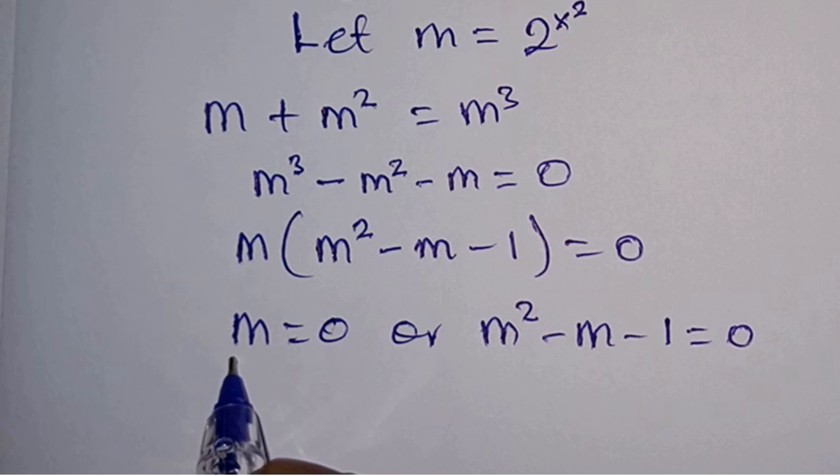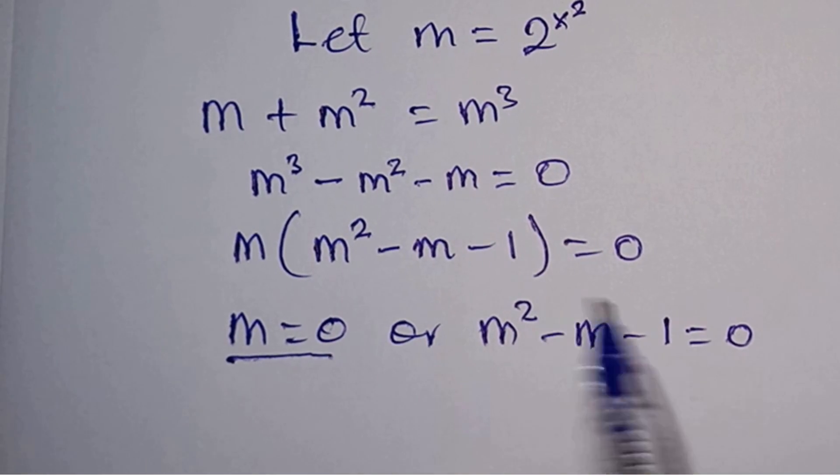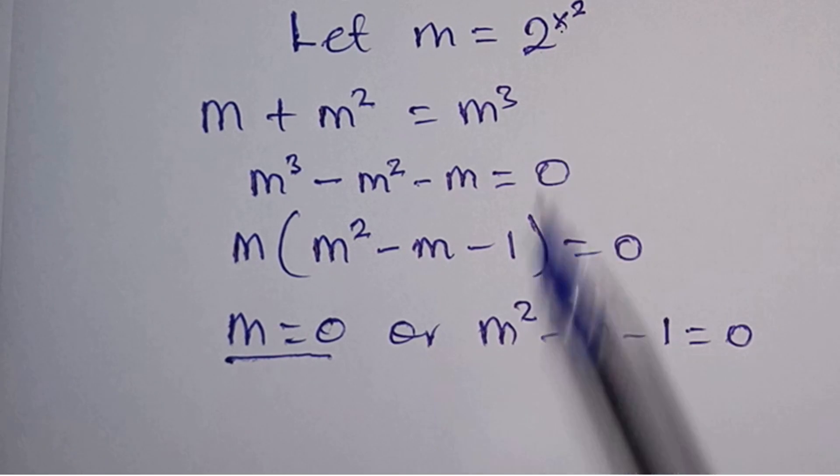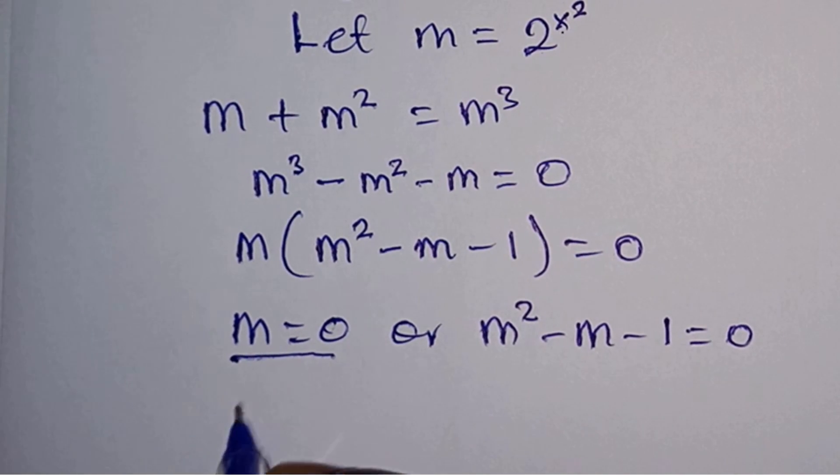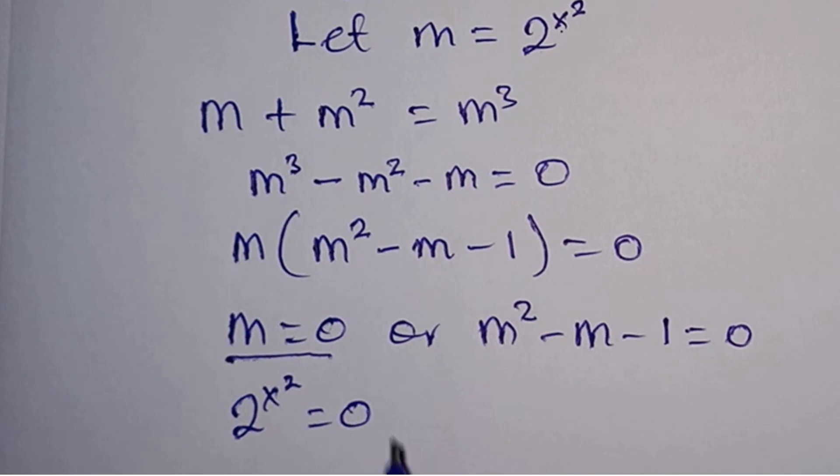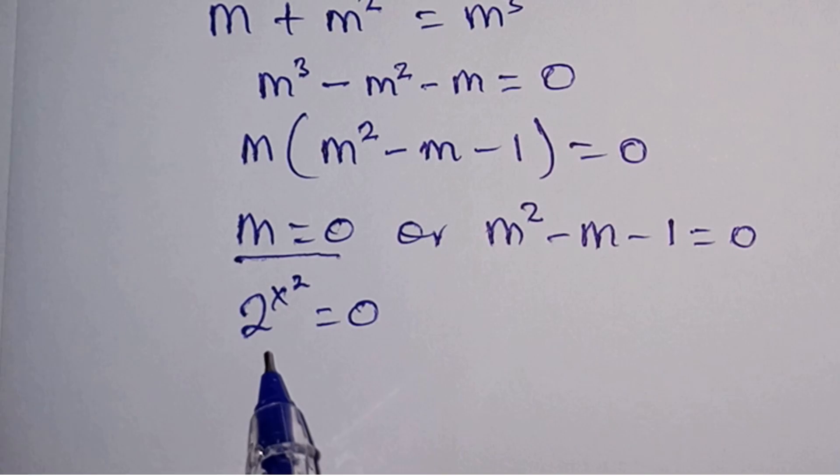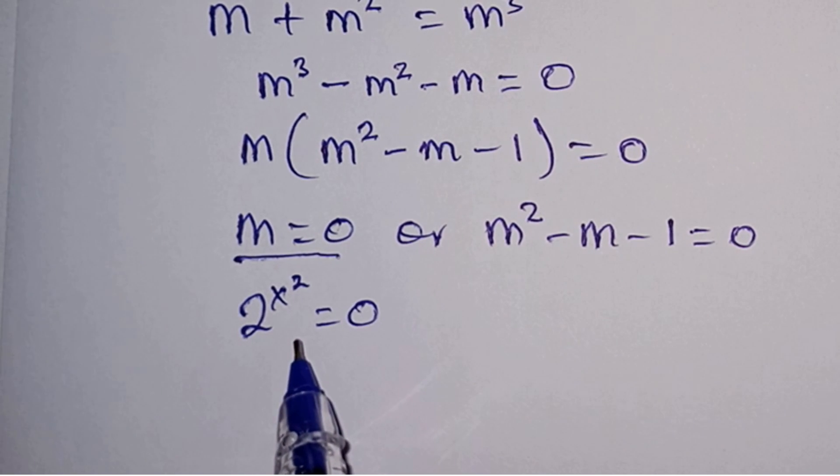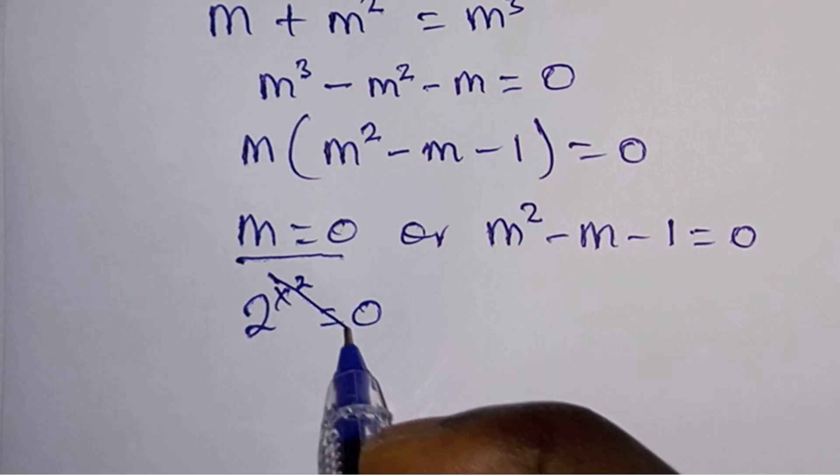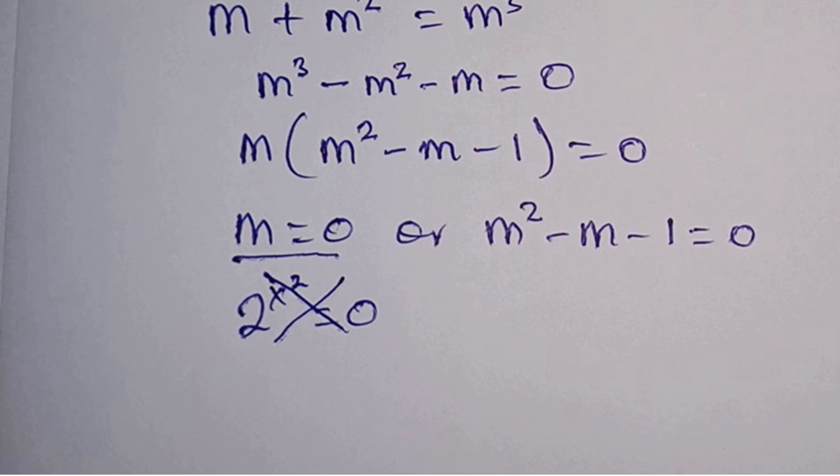Now let's pay attention to this value of m. Initially we let m equal to 2^(x²), so from this equation we can have 2^(x²) = 0. Now the truth is that this equation cannot be solved because if you try to manipulate the value of x you will never get 0. You can try it on your own. So don't worry yourself here, this equation cannot be solved.